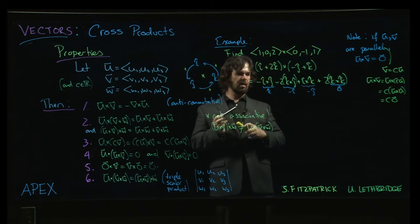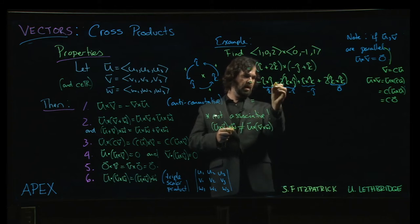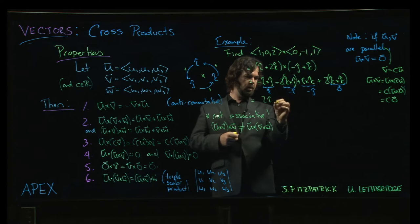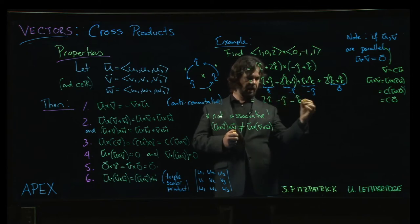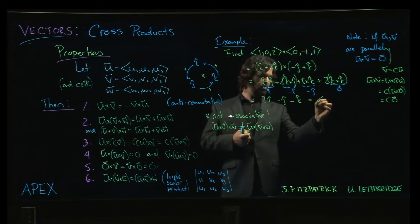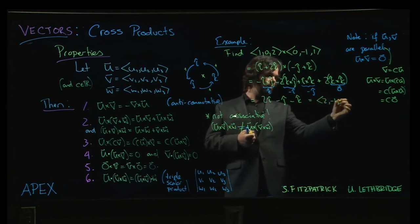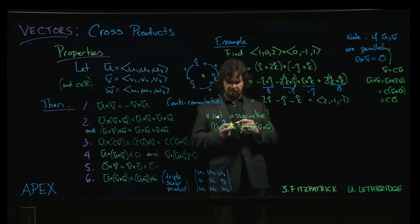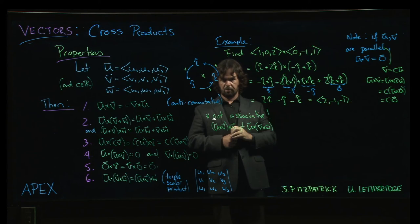And so then you would have, collecting things up here, we have minus 2 times minus i is 2i minus j minus k. So 2 minus 1 minus 1. So there are occasions where that is sometimes a convenient way of realizing that you can also calculate the cross product that way as well.